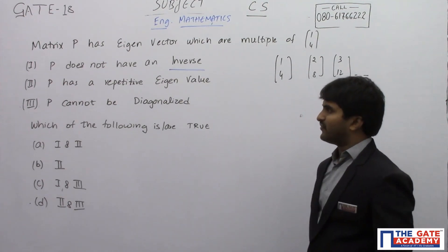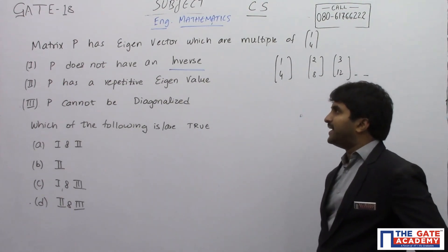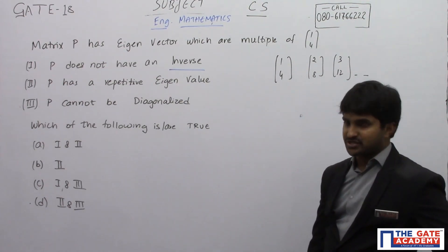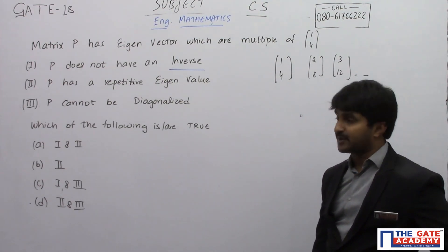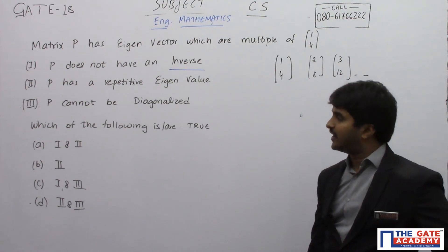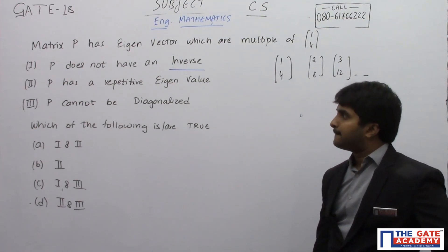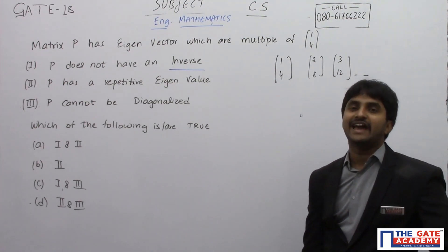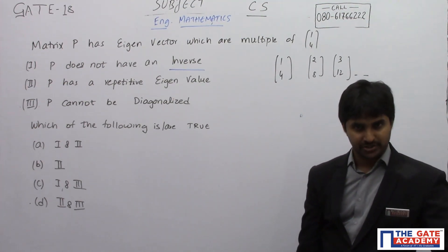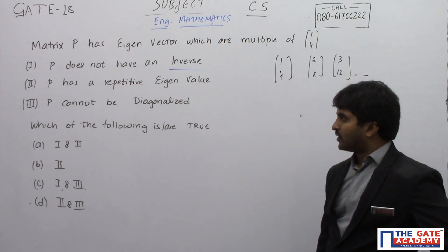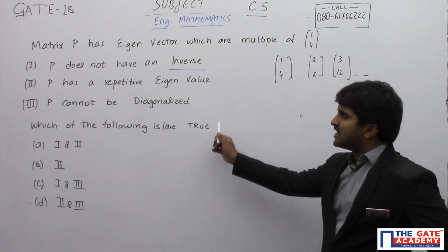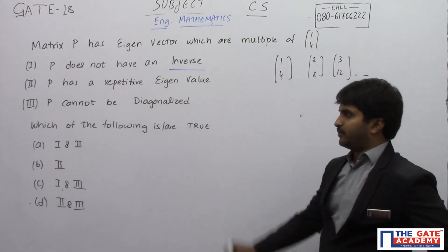Now the first statement is that P does not have any inverse. The second statement is that P has repetitive eigenvalues. The third statement is that P cannot be diagonalized. The options are based on these three statements.